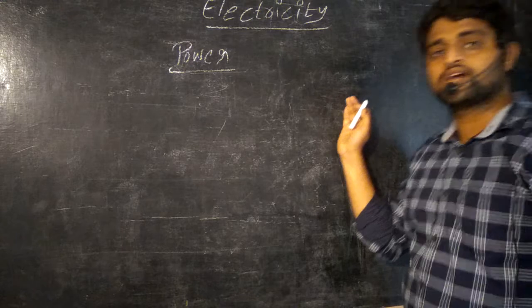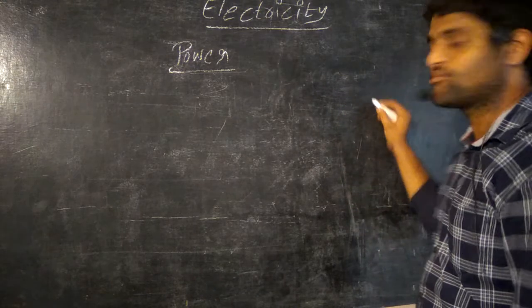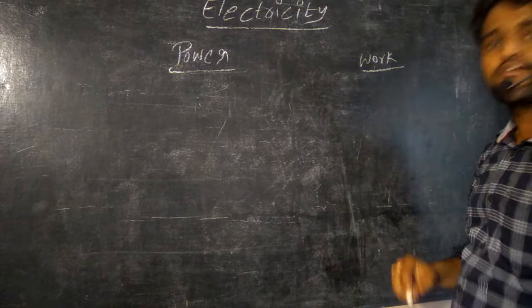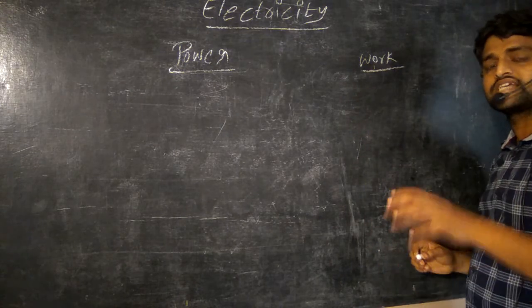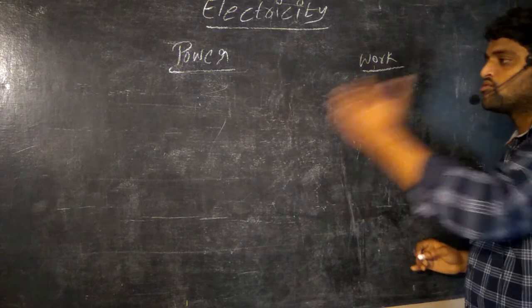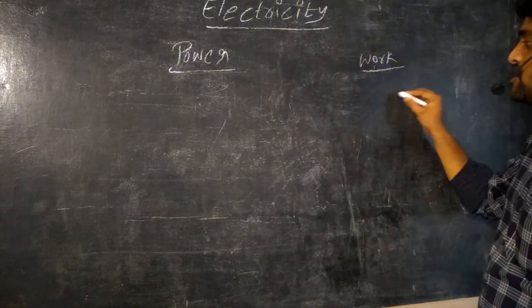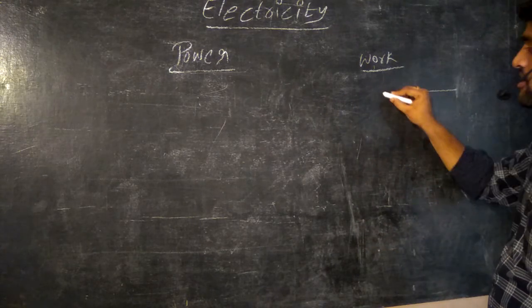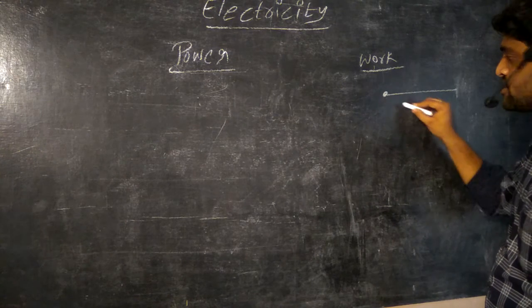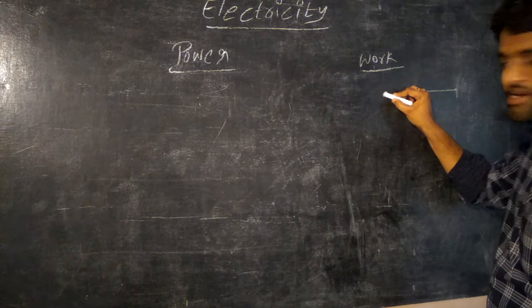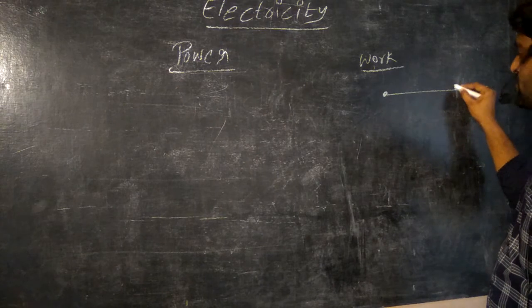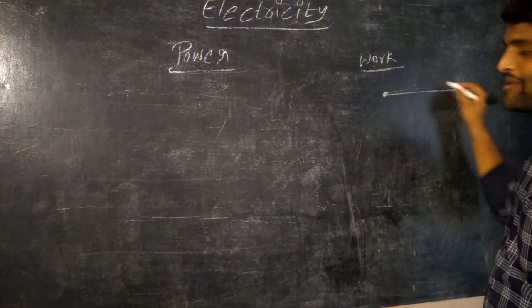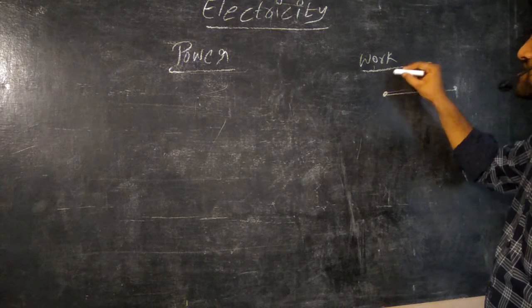For work, in this total sentence we got a new point called work. Let us define work. Work is nothing but an amount of force applied on a particular object to move from one place to another place. Or it can be said as we have some object, we are moving this object with some force from here to here. So some displacement has happened by the object because of the application of some force. So that is called work.